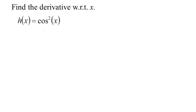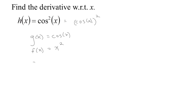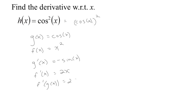One more example. We've got the cosine of x, squared. Remember that's just shorthand for cosine of x times itself. We can think of the inside function as being cosine and the outside function as the function that squares things. The derivative of the inside is the negative sine of x, and the derivative of the outside is 2x. So the derivative of the outside with the inside plugged in — since the inside function is cosine — we're going to get 2 times the cosine of x.